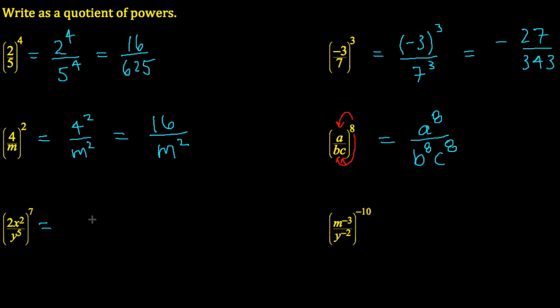In this third example, we have 2x squared divided by y to the exponent 5, all raised to the exponent 7. Once again, we'll give that exponent to everything. So the 2 gets the exponent of 7, the x squared gets the exponent of 7, and the y to the 5 receives that exponent of 7.